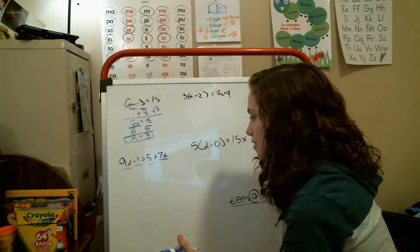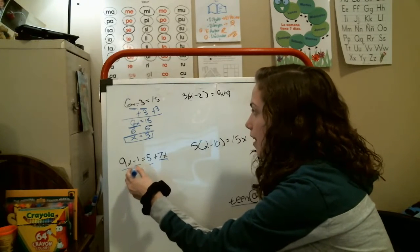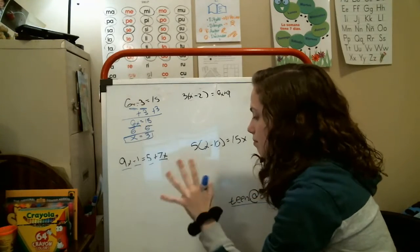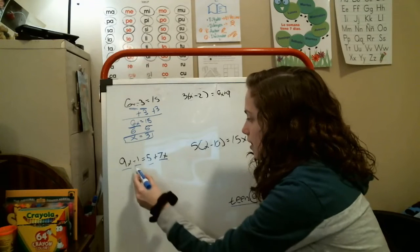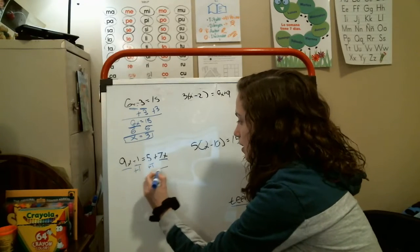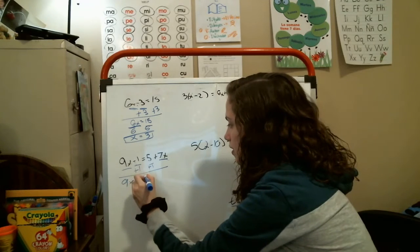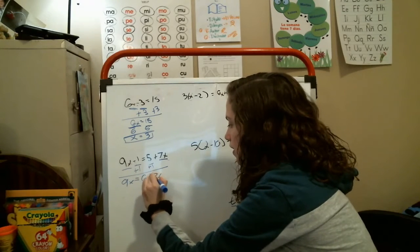To make this easier for yourself, I'm going to do with this negative 1 right here. As done in the previous equation, it's a negative, so that means you have to add it to both sides. You add one here and add one here. You have 9x equals 6 plus 7x.